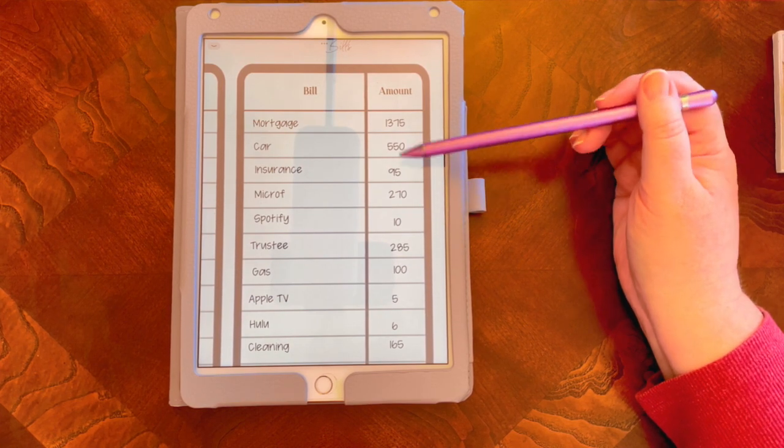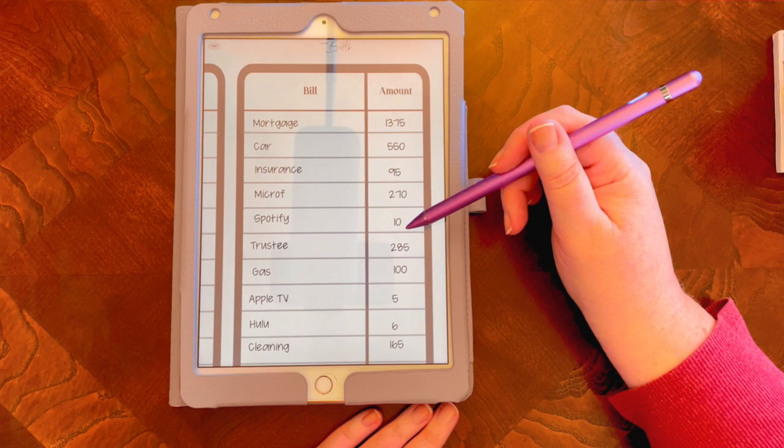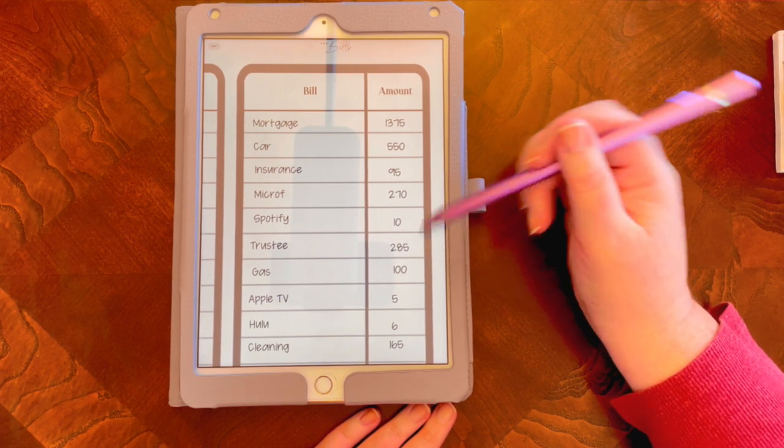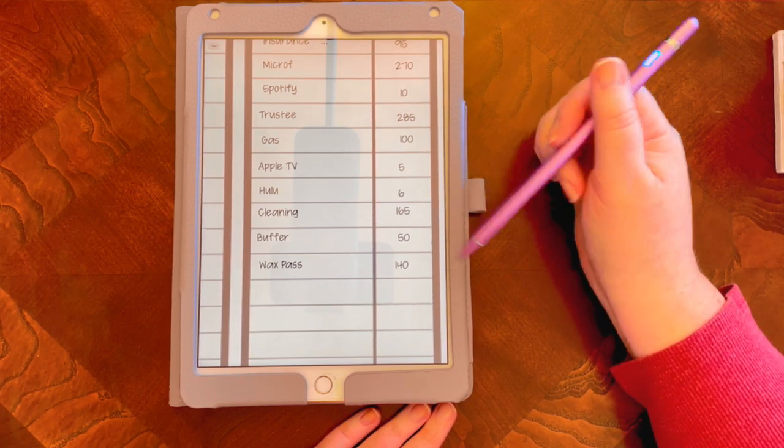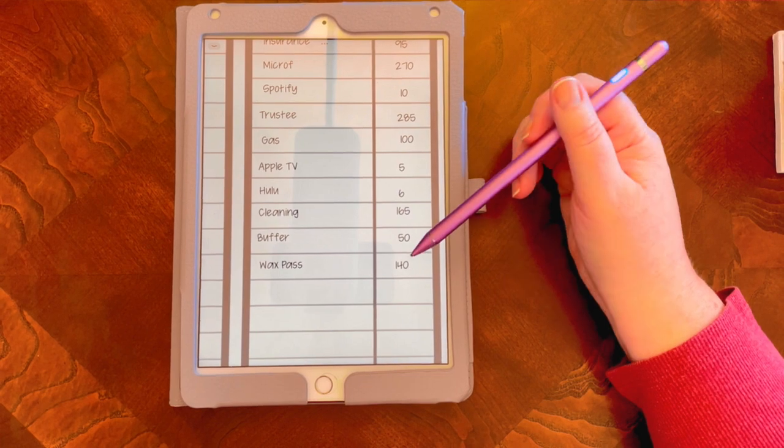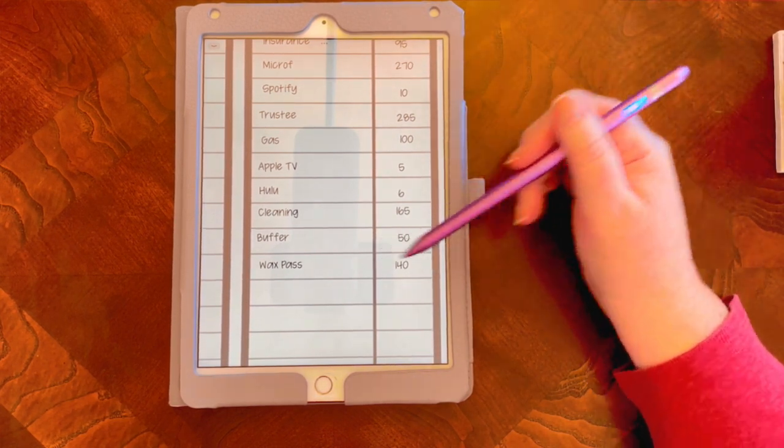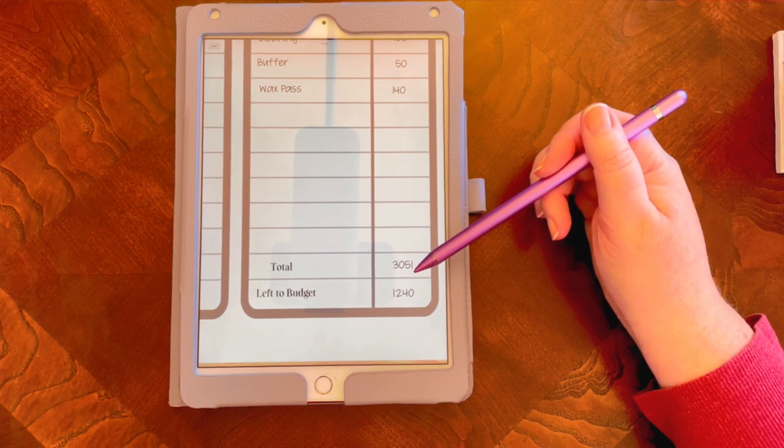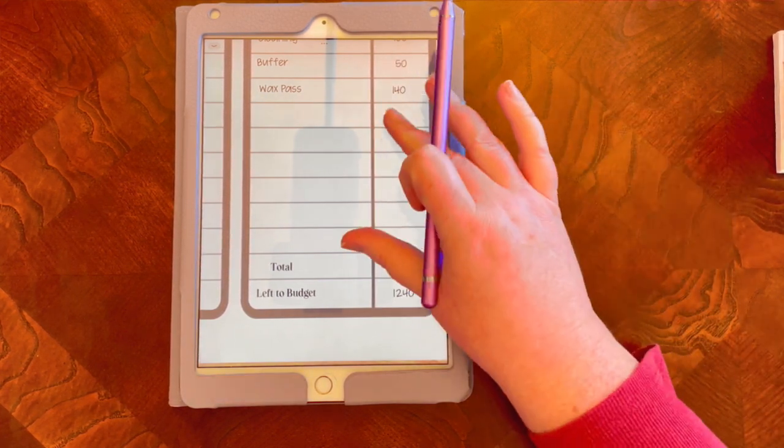My car payment of $550, my car insurance $95, my AC unit payment of $270, Spotify $10. I paid the balance of my bankruptcy payment out of this paycheck, and that's $285. I always budget $100 for gas for two weeks, Apple TV $5, Hulu $6, my cleaning service $165. I have a buffer in here for $50. And then I finished what I needed to get that wax pass where now that's covered for the next year. Because they always have a special this time of year, buy nine get three free. So the total bills and expenses out of this paycheck will be $3,051, which leaves me $1,240 to stuff into envelopes.